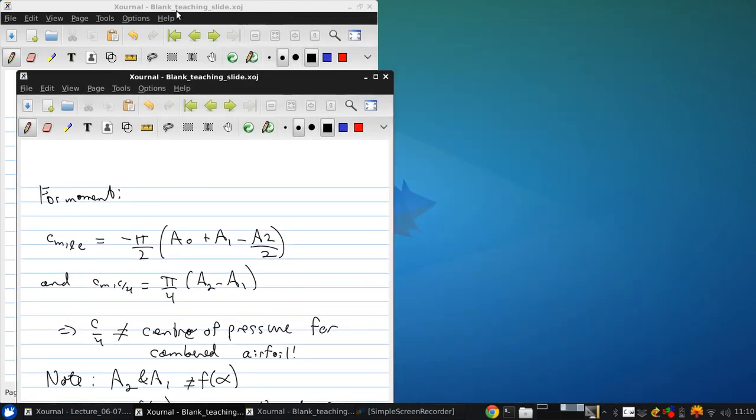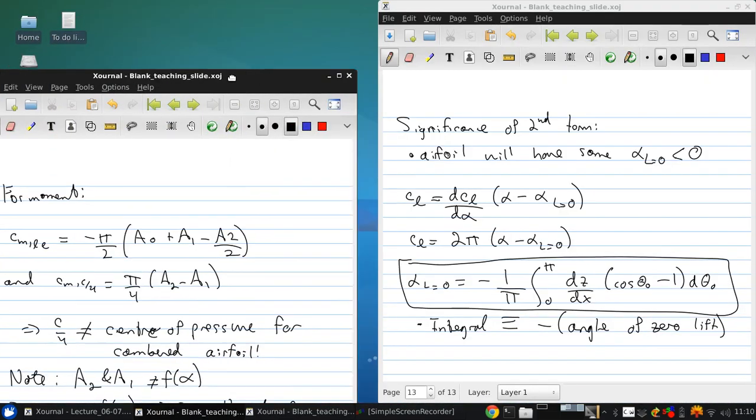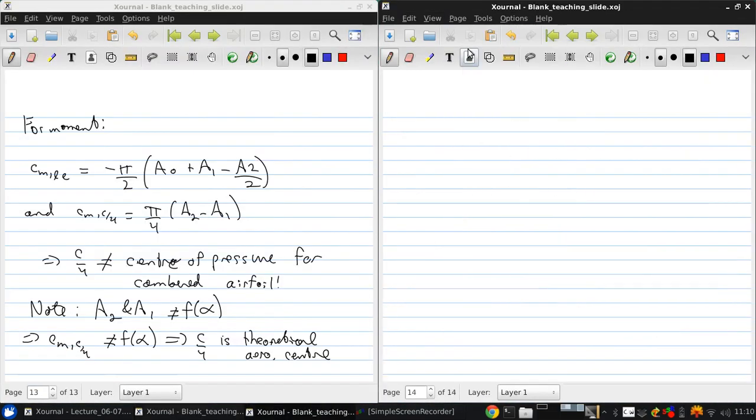And the location of the center of pressure we can also write down: xcp is c over 4 times 1 plus pi over cl a1 minus a2. And because cl is in there, this does vary with the angle of attack.